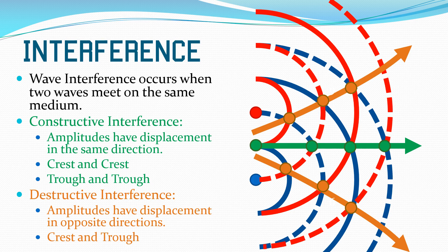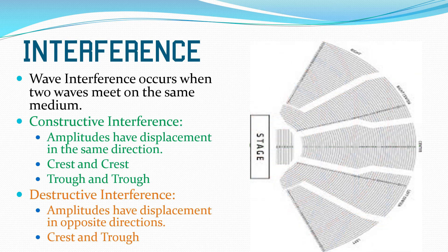If these were sound waves, the constructive interference would be louder. The destructive interference would be softer. This is exactly why theaters are set up the way they are, due to lines of destructive and constructive interference.